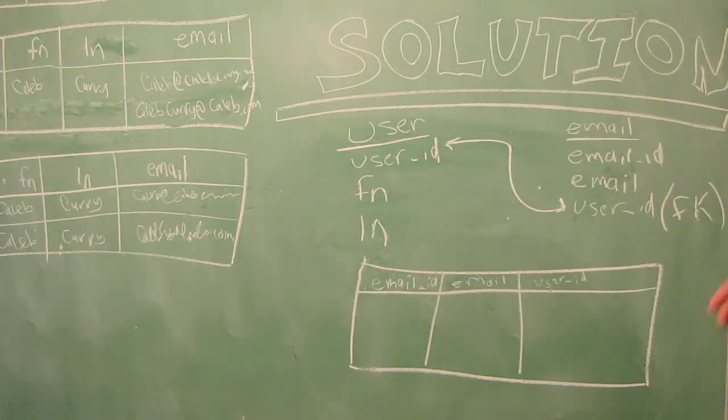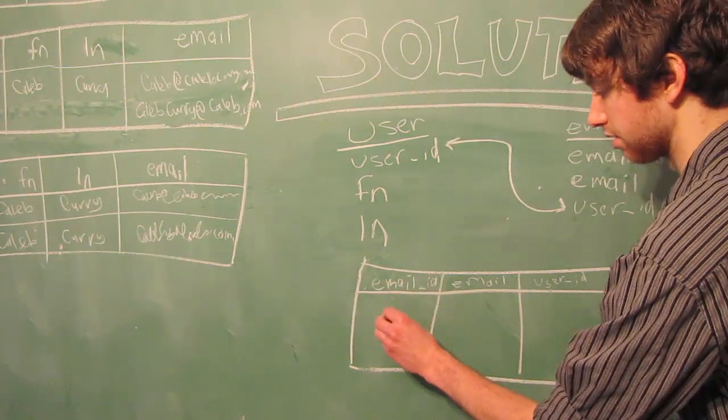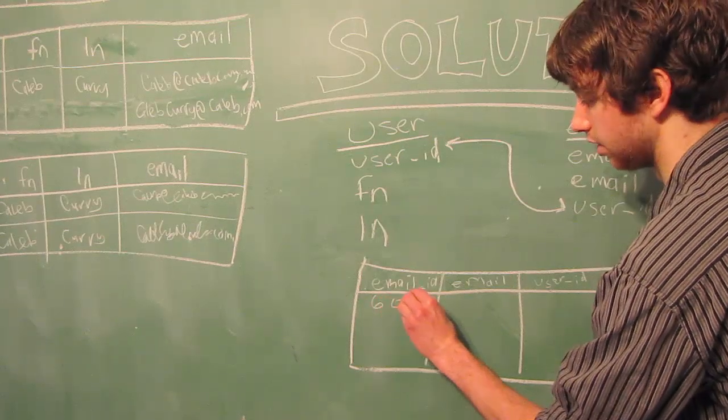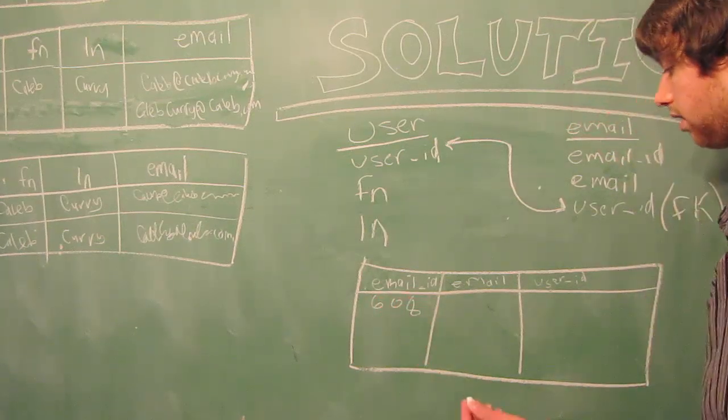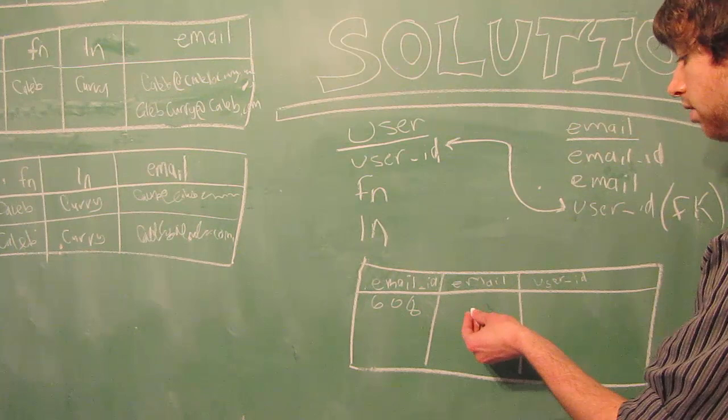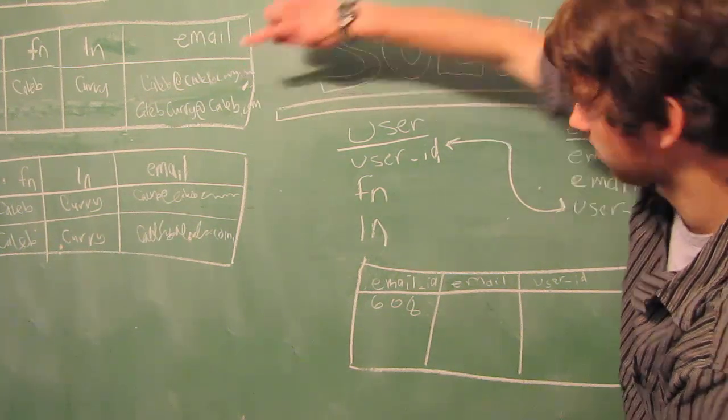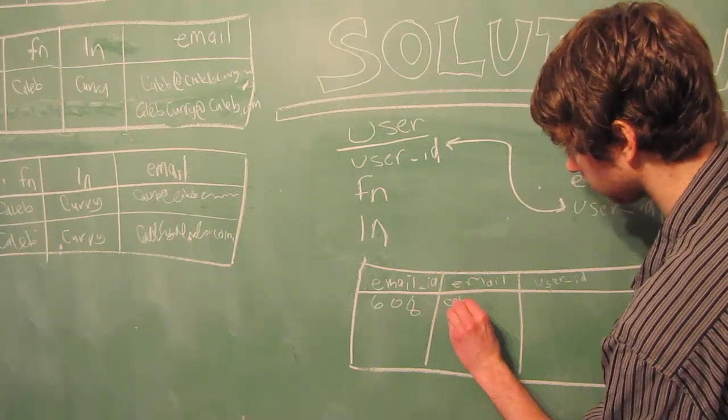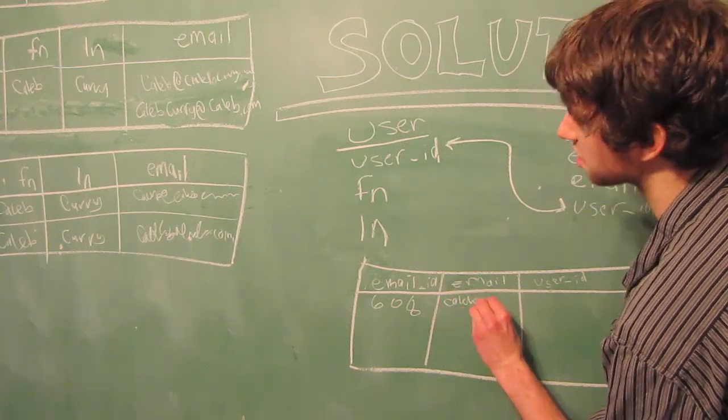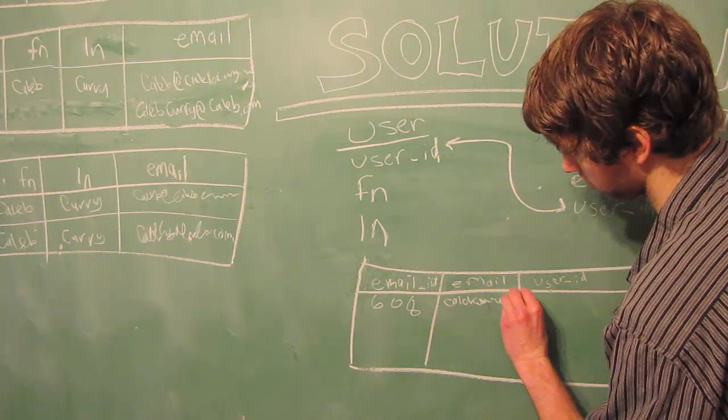Here's what the email table might look like. Then we would have an email ID, which is just a randomly generated number for each email. 608 is fine. And then the email, that's going to be the actual address of the email. So we could have this. I'll try to make it just as bad as handwriting. Perfect.